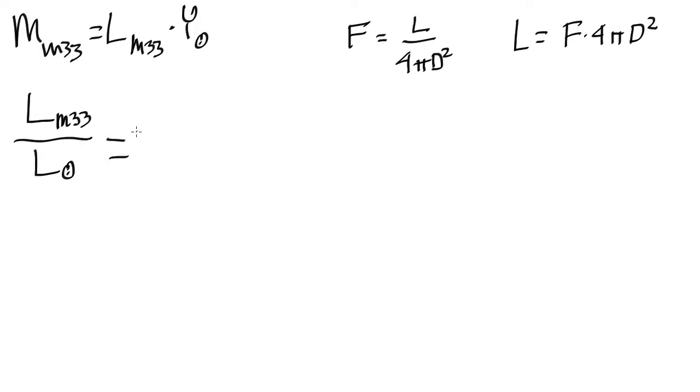Well, from up here, we know we have the flux of M33 times 4 pi times the distance to M33 squared, and then we do the same thing for the sun. So we have the observed flux of the sun, 4 pi d, the distance to the sun, squared.